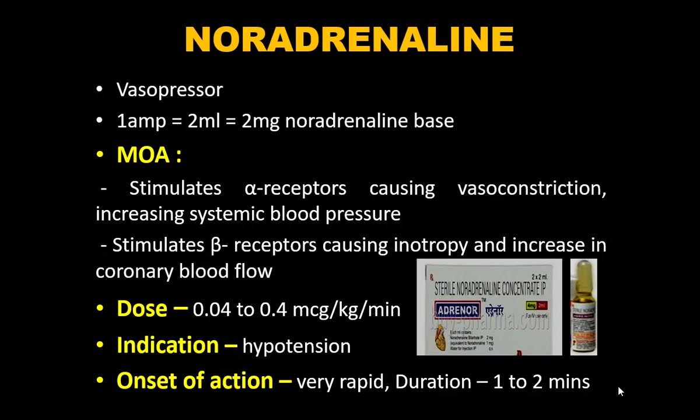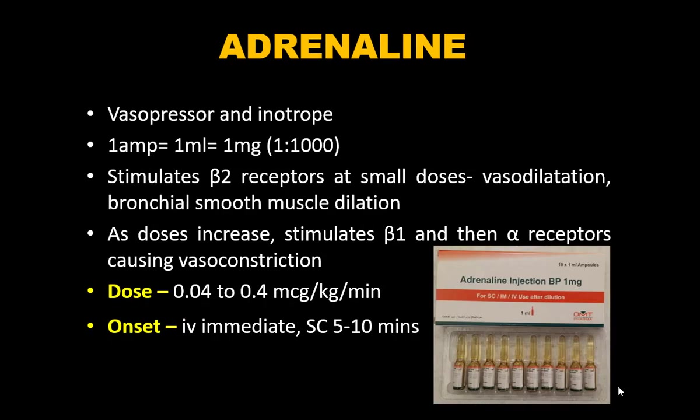Adrenaline is both a vasopressor and inotrope — one ampoule contains 1 mg/mL. At small doses it stimulates beta-2 receptors, causing vasodilation and bronchial smooth muscle dilation. As dose increases, it stimulates beta-1 then alpha receptors, causing vasoconstriction. Dose is similar to noradrenaline: 0.04–0.4 mcg/kg/min. Onset is almost immediate IV; 5–10 minutes subcutaneously.